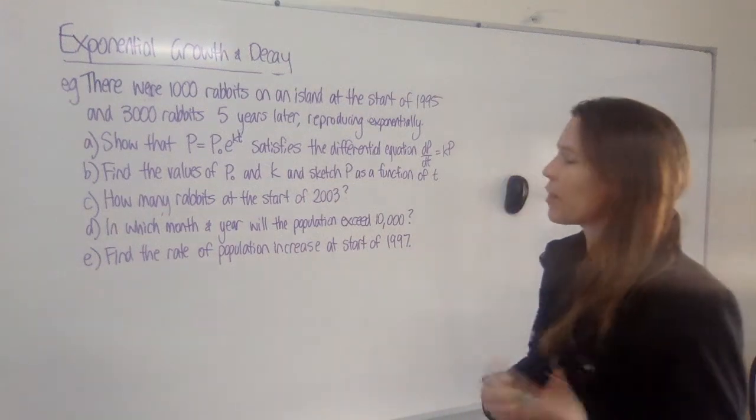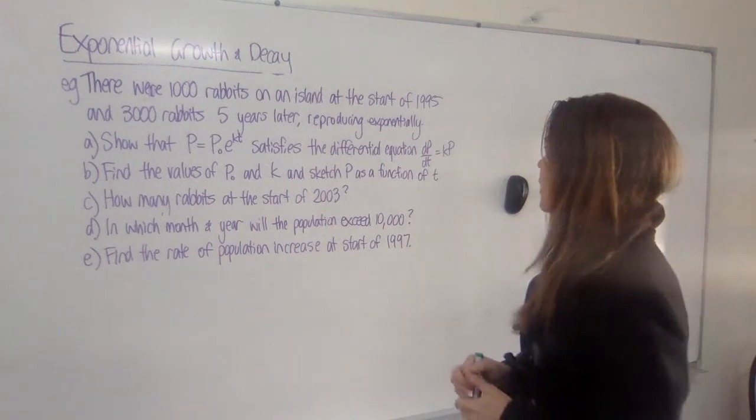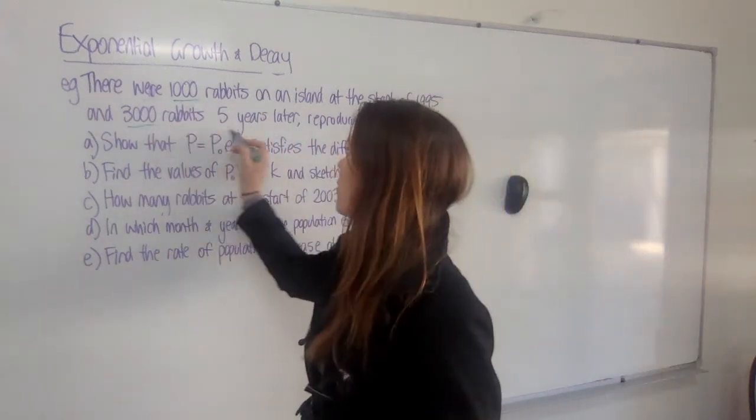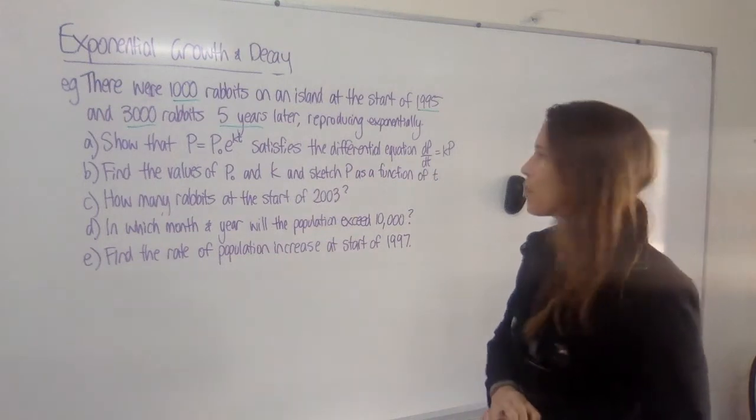And now an example. There were 1,000 rabbits on an island at the start of 1995, and 3,000 rabbits five years later. I always underline the important parts.